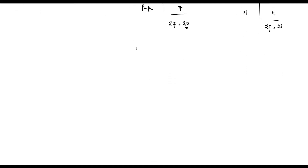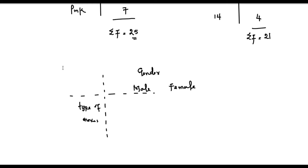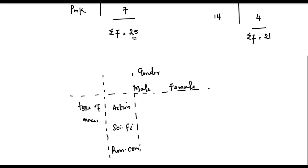The only time we use a two-way table is when we have two categorical variables. For example, let's say we have gender — male and female — and we have type of movies. For type of movies, let's say we have action, sci-fi, and romantic comedy. So we have our two variables of interest: type of movies is one categorical variable, and gender is another categorical variable.